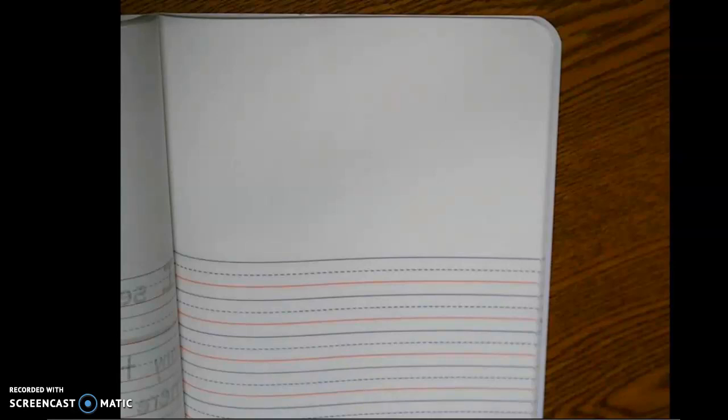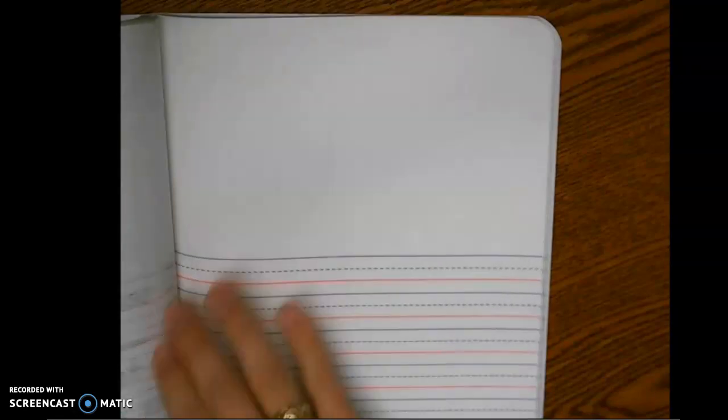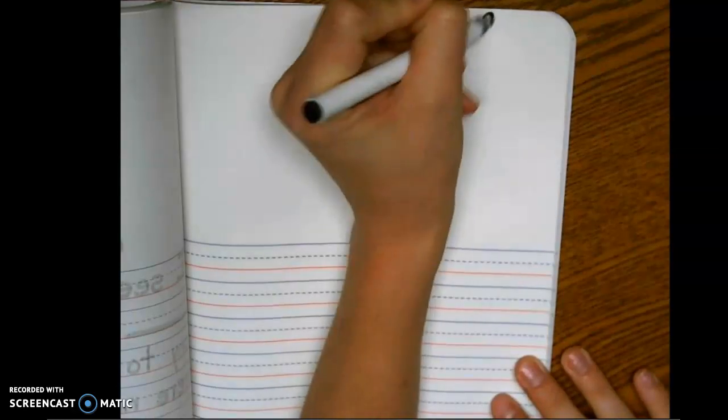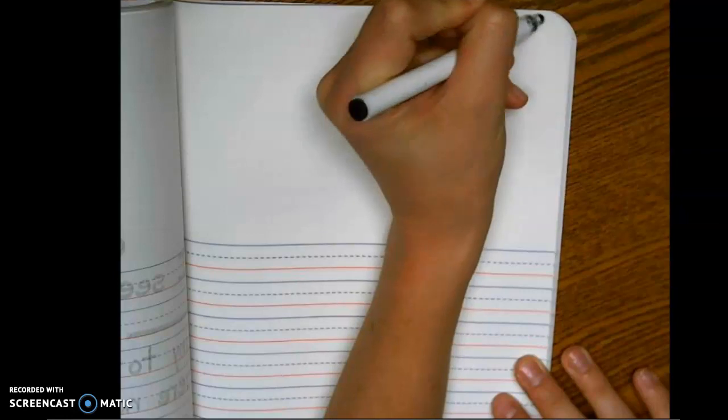Okay, so for Fact Fluency Friday today we are going to do some work together in our journals up here. Go ahead and let's write today's date, which is 11-20-20. That means it is November 20th, 2020.